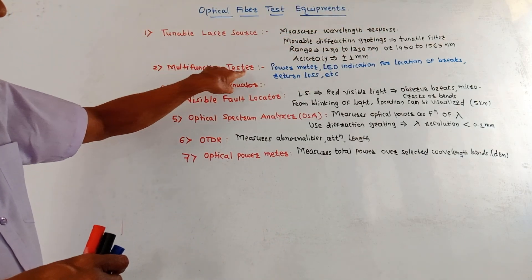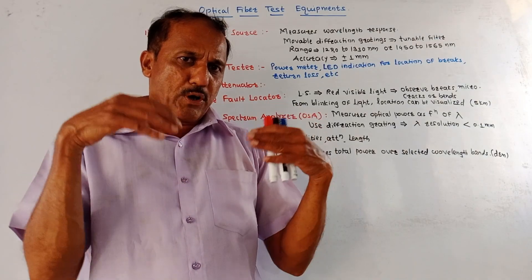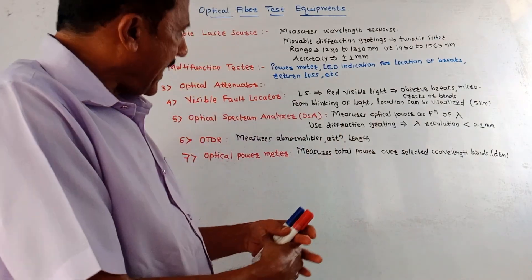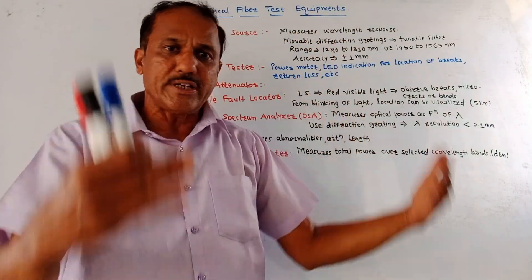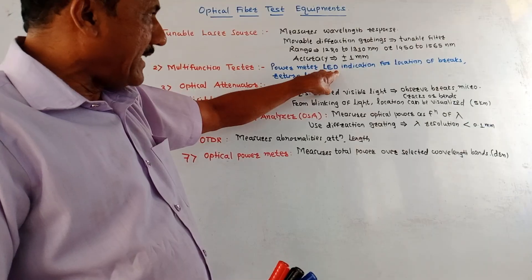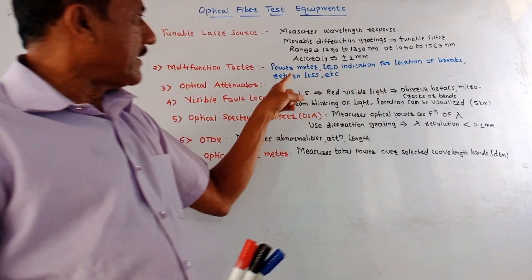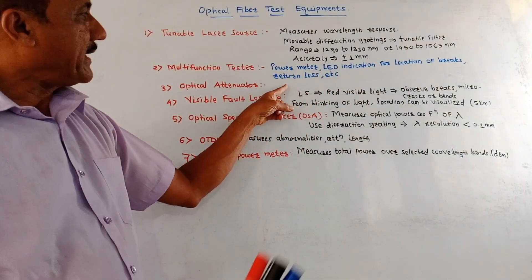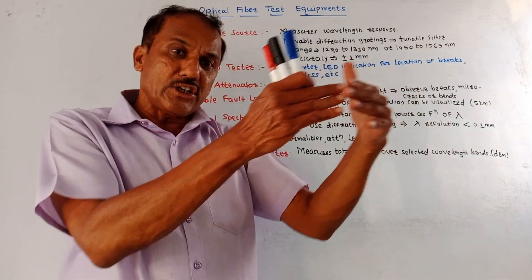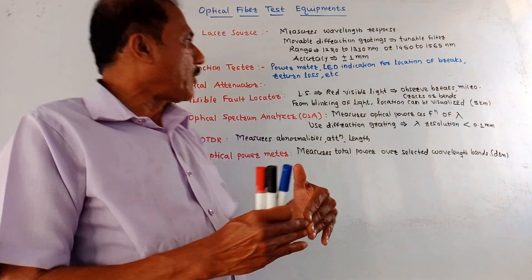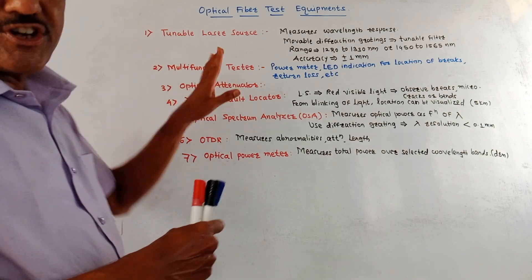Second device is a multifunction tester. As the name indicates, it is used to perform different tasks. It has a power meter as well as LED indication, meaning it gives visual indication by making use of LED. LED indication is used for the location of breaks. If there are any breaks in the optical cable, it also gives indication of the return loss taking place in the fiber optic cable.